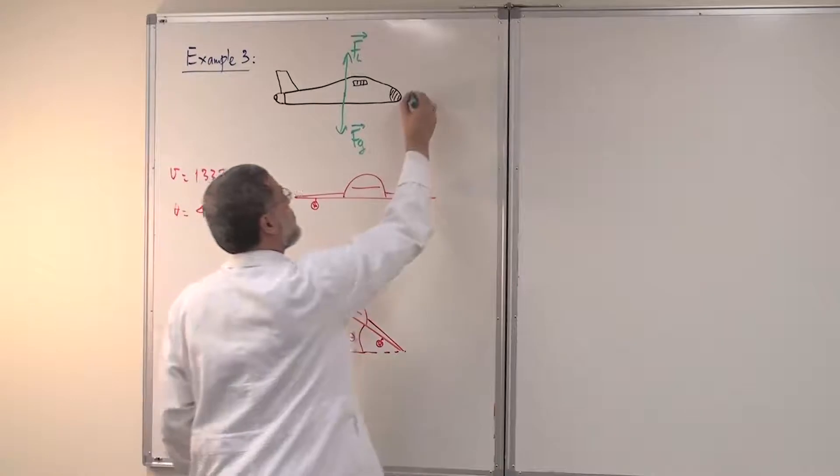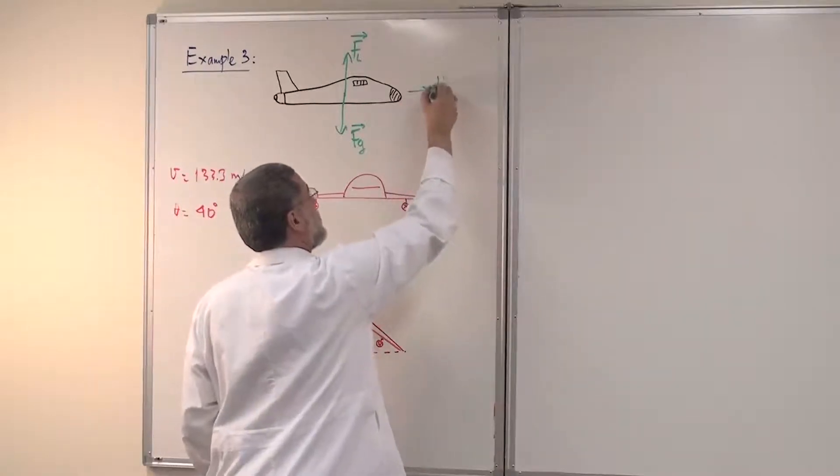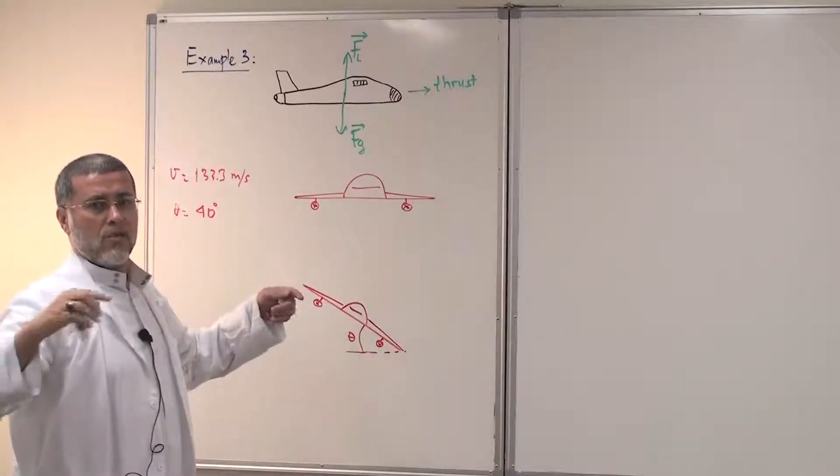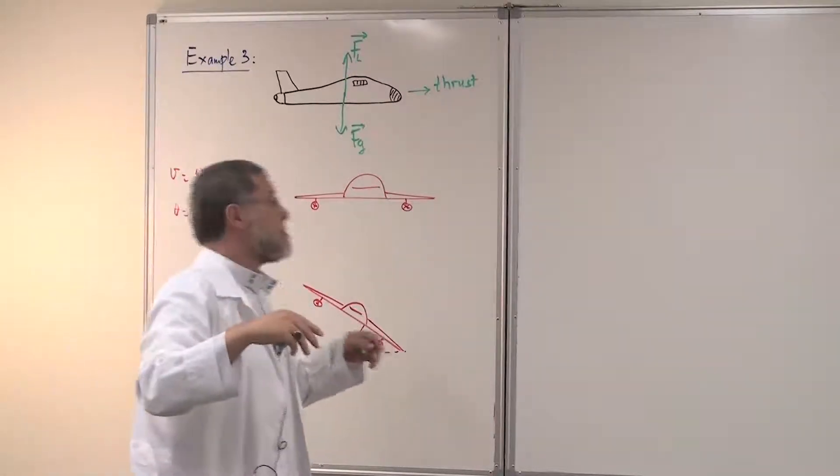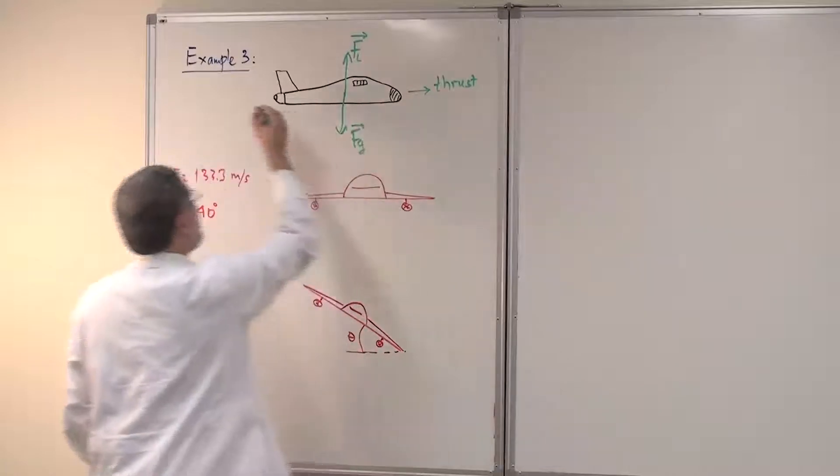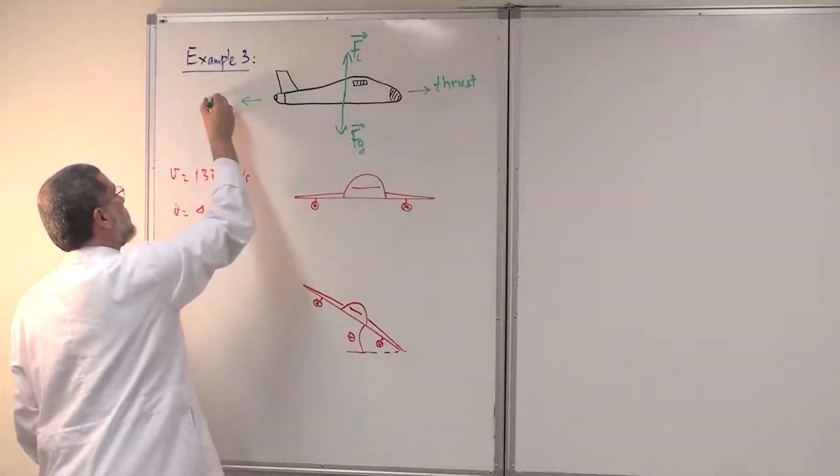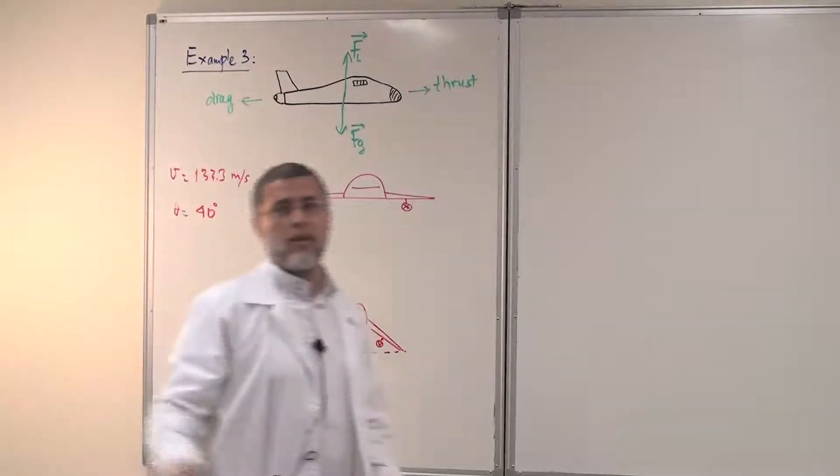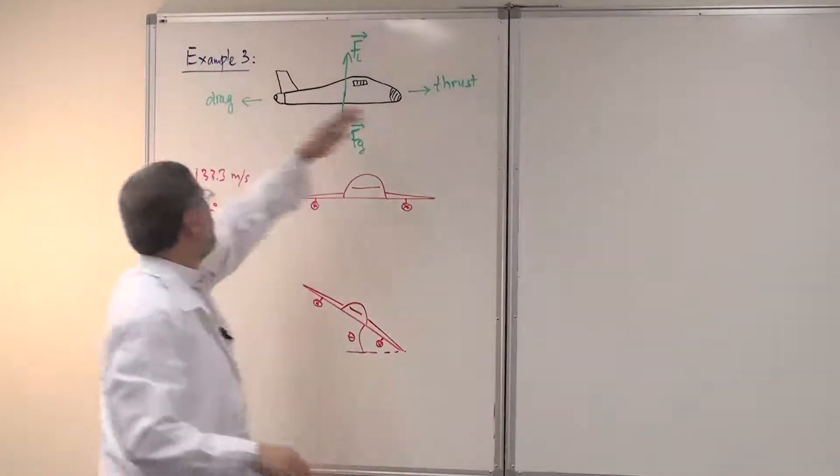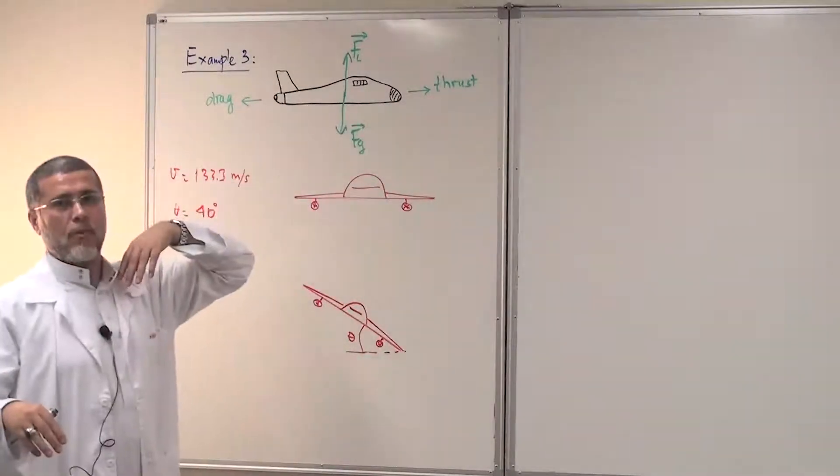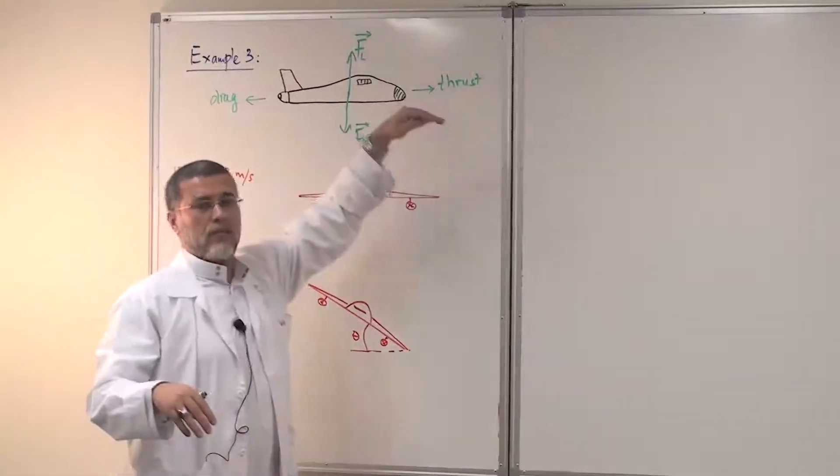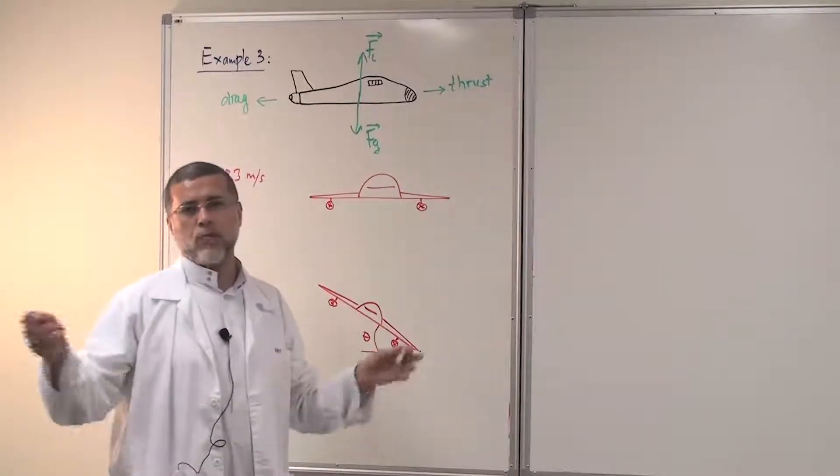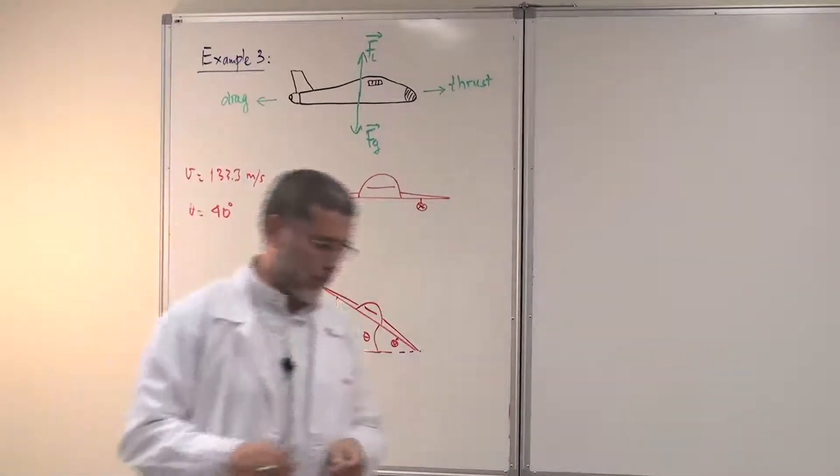Now we have also what is called the thrust of the engine. Of course, the thrust is coming from the engines. And we have also here what we call the drag force, the air resistance. These are the forces acting on the airplane when it is moving horizontally at constant speed, let's say, 900 kilometers per hour or something like that.